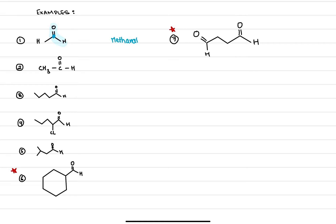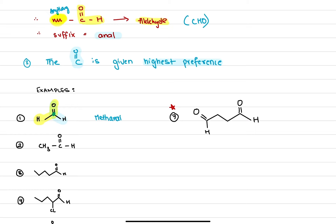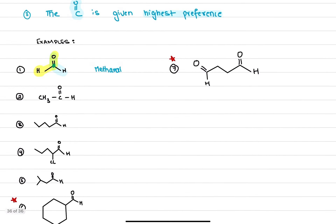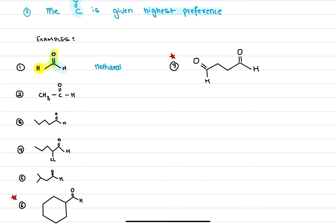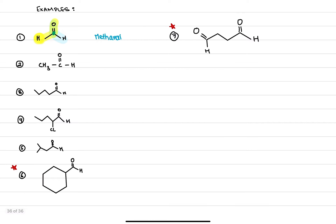So I'm going to say this is methanal — and there's your name for the molecule. This is the example in which the carbonyl carbon has a hydrogen attached, not a carbon. In this case there was a hydrogen attached, and we call this methanal. This also tells you that the smallest possible aldehyde is methanal, whereas the smallest possible ketone was propanone.